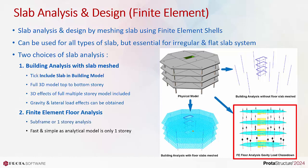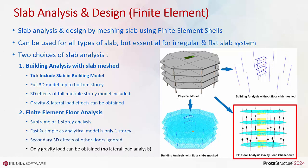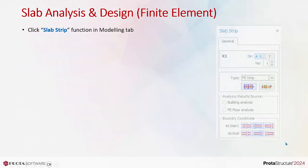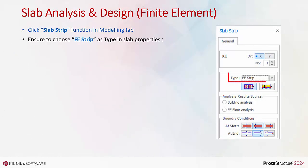The FE floor analysis is fast and simple as the analytical model covers only one story; secondary 3D effects of other floors are ignored. Only gravity load can be obtained — there is no lateral load analysis. Click the slab strip function in the modeling tab.